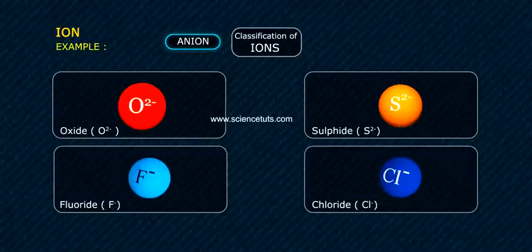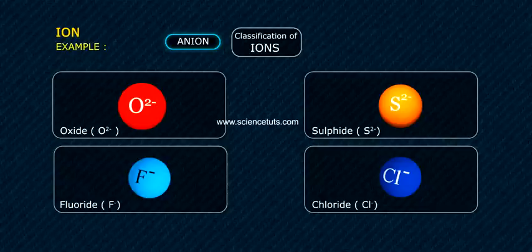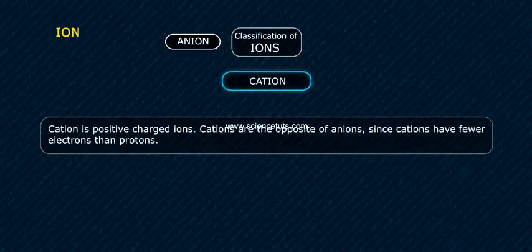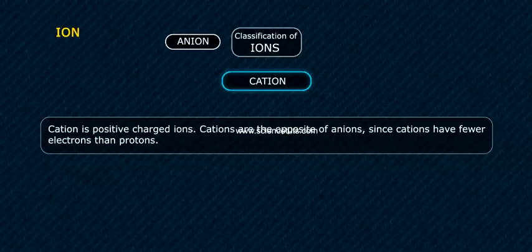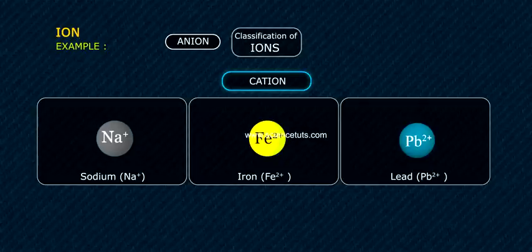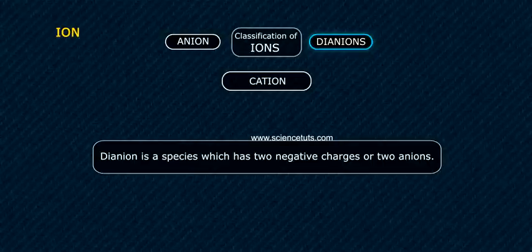Example: Oxide O2−, Na+, Iron Fe2+, and Lead Pb2+. A dianion is a species which has two negative charges or two anions.